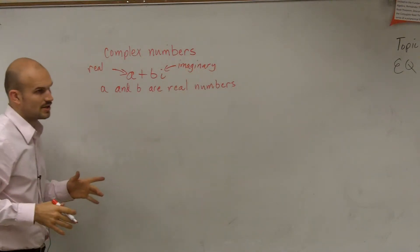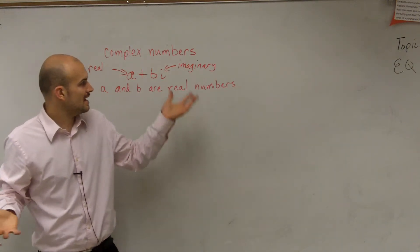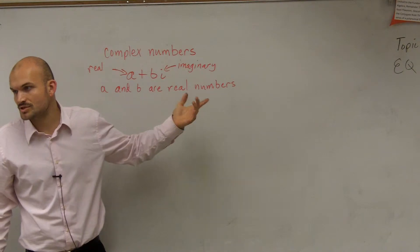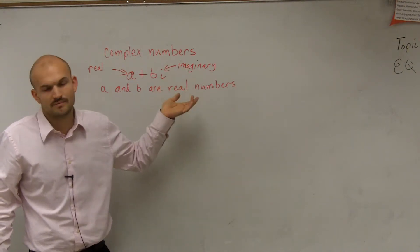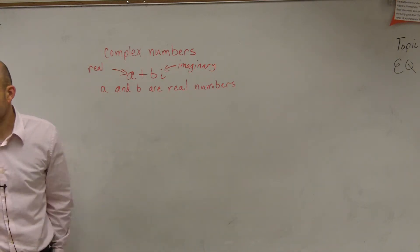So complex numbers are actually a combination of real numbers, which we are used to, and imaginary numbers, which is going to be in the form of b i, where b would be like your coefficient of your imaginary number. Does that make sense?